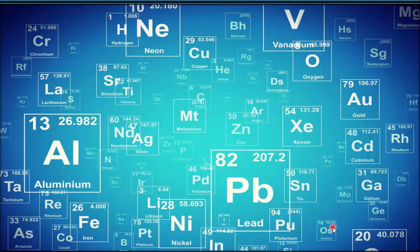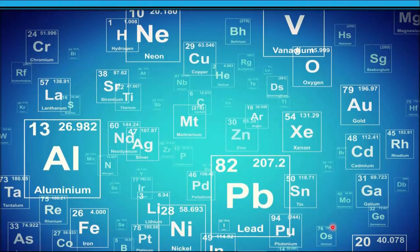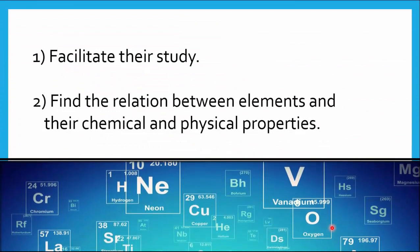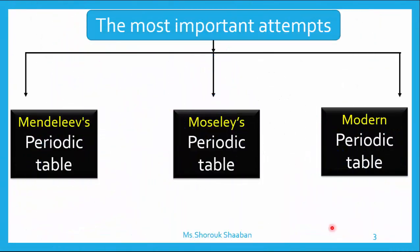So again, why did scientists try to classify the elements? Two reasons: number one, to facilitate their study, and number two, to find the relation between elements and their chemical and physical properties. Both would be easier when you classify the elements and make them organized. Now let's see who are the scientists who tried to classify the elements. We have three: Mendeleev's periodic table, and the Modern periodic table.